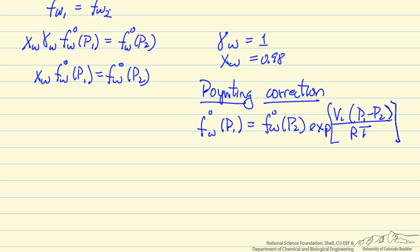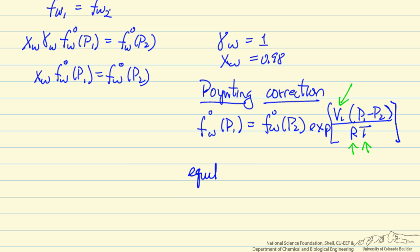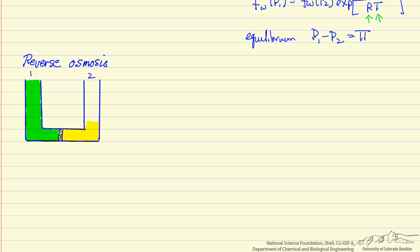The Poynting correction states that the fugacity of pure water at pressure P1 equals the fugacity at pressure P2 times an exponential: exp[(P1 − P2) · V_L / (RT)], where V_L is the molar volume of the liquid, R is the gas constant, and T is the absolute temperature. Since we have been talking about equilibrium, P1 minus P2 is our osmotic pressure.